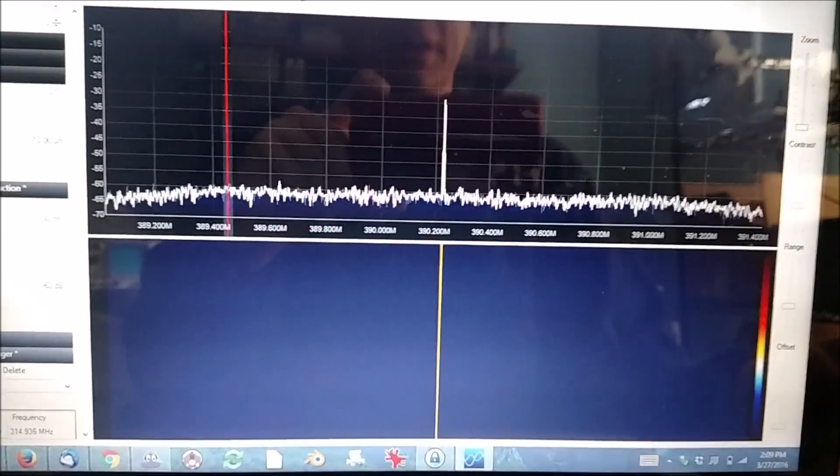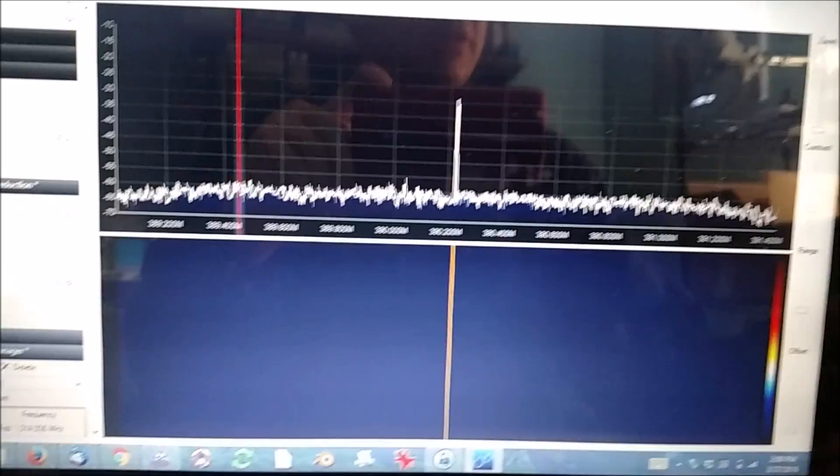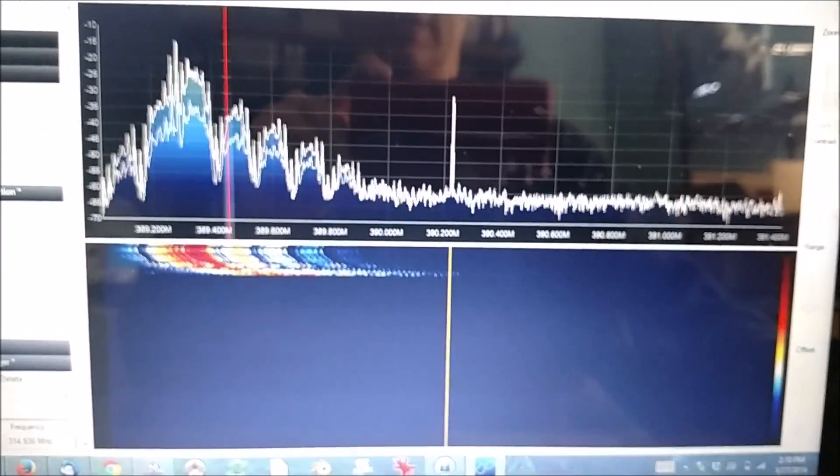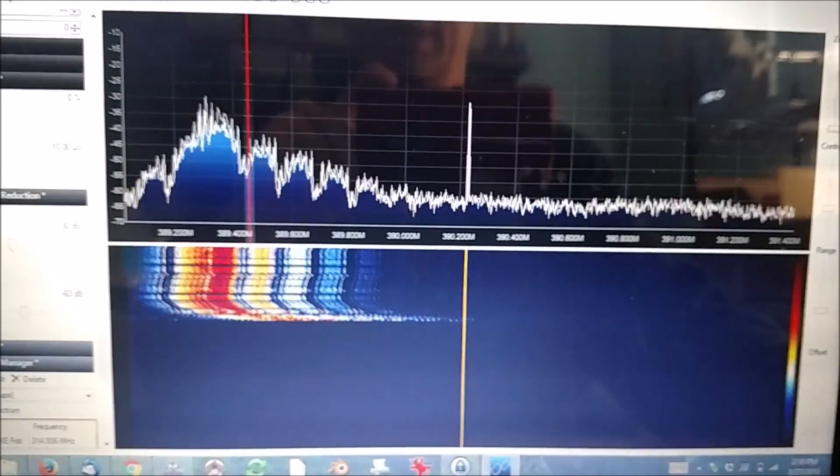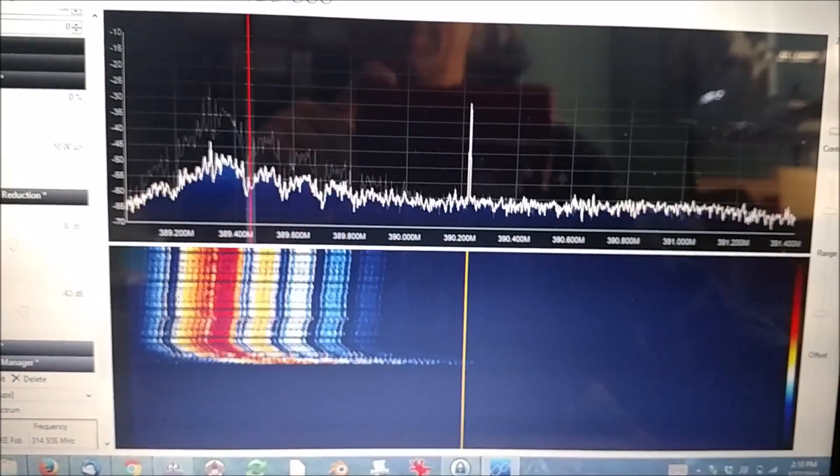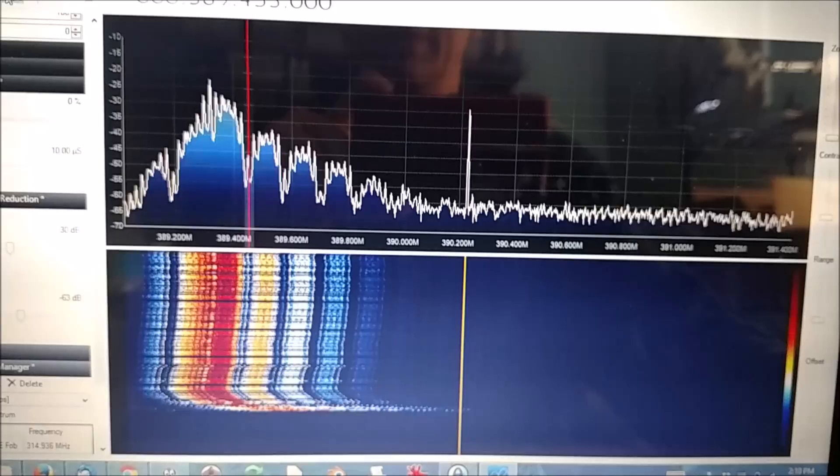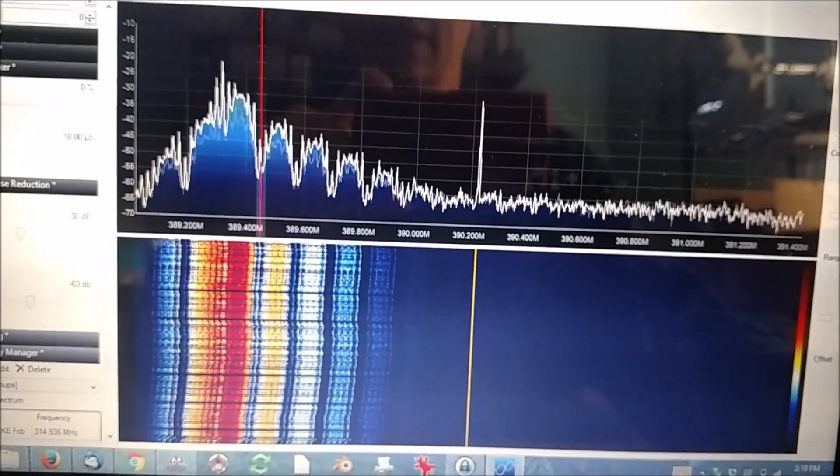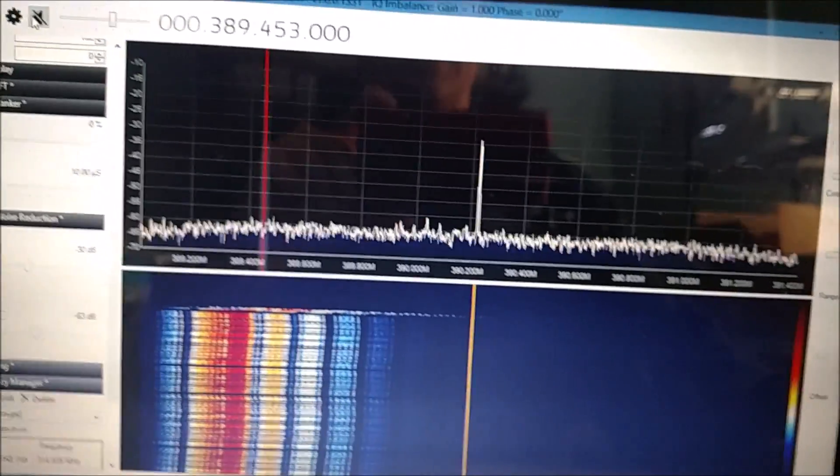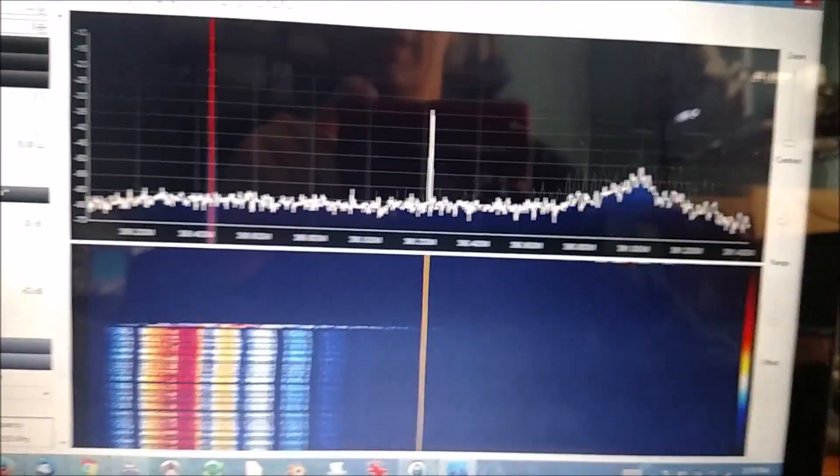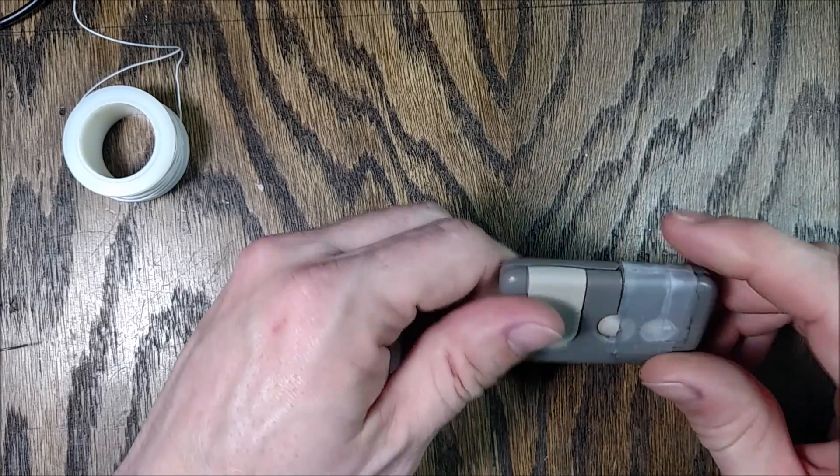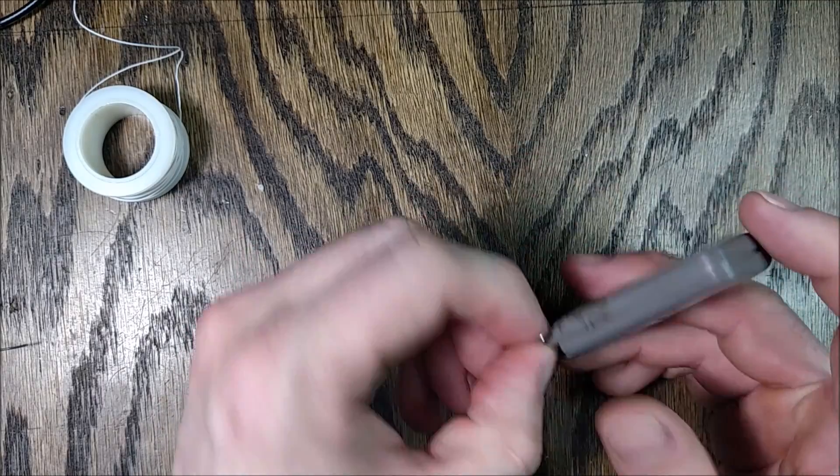So back on the laptop here with the radio dongle, I can hit the button and there we go—it's transmitting. The frequency is not very accurate. It's supposed to be 390 megahertz. This one's coming in about 389, and my other visor remote comes in over here about 391.